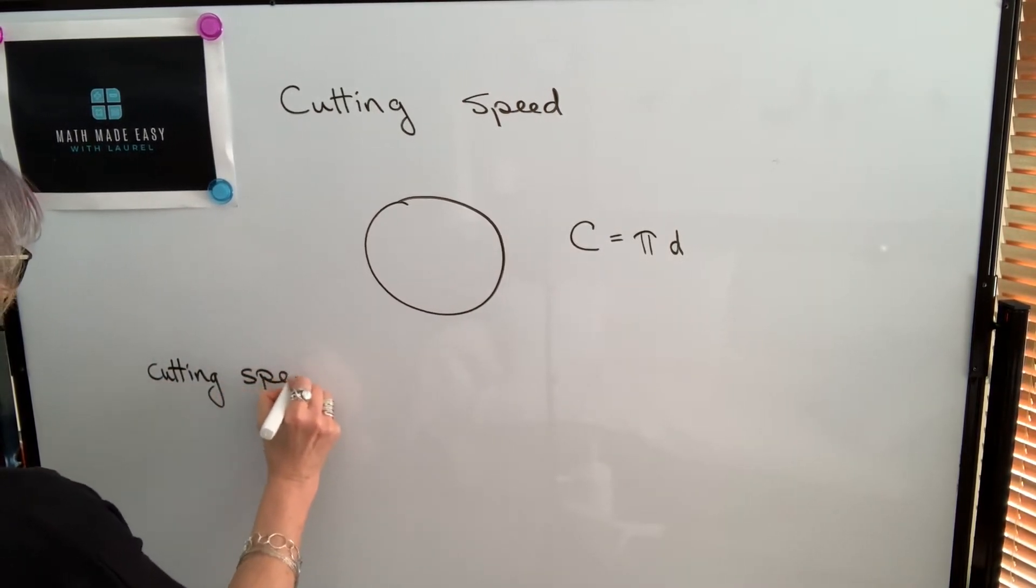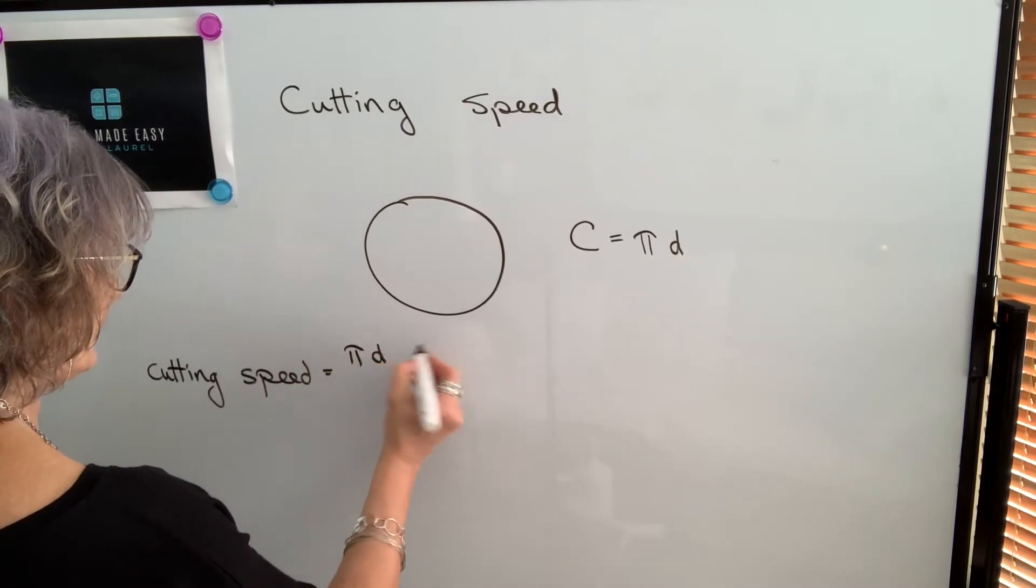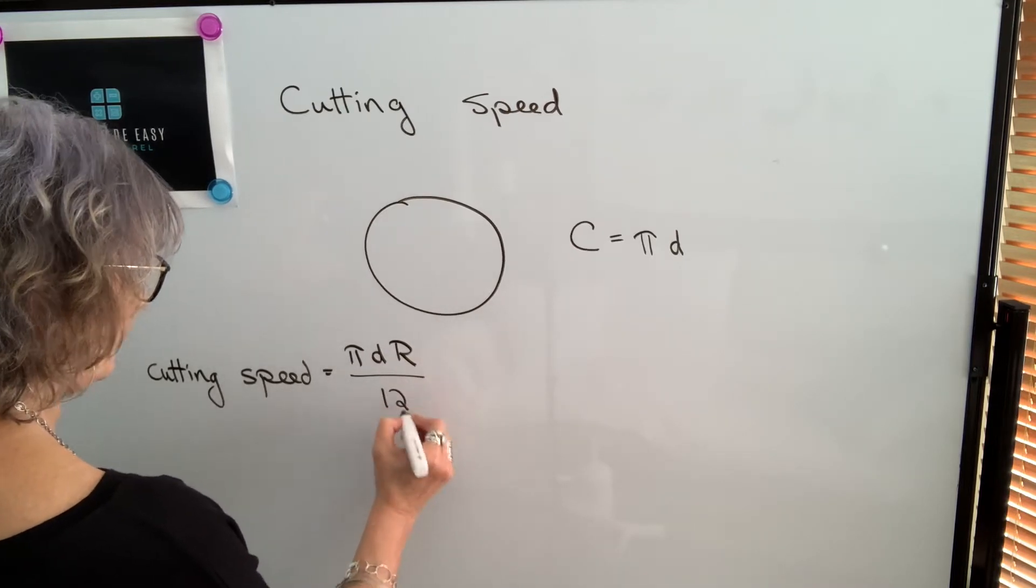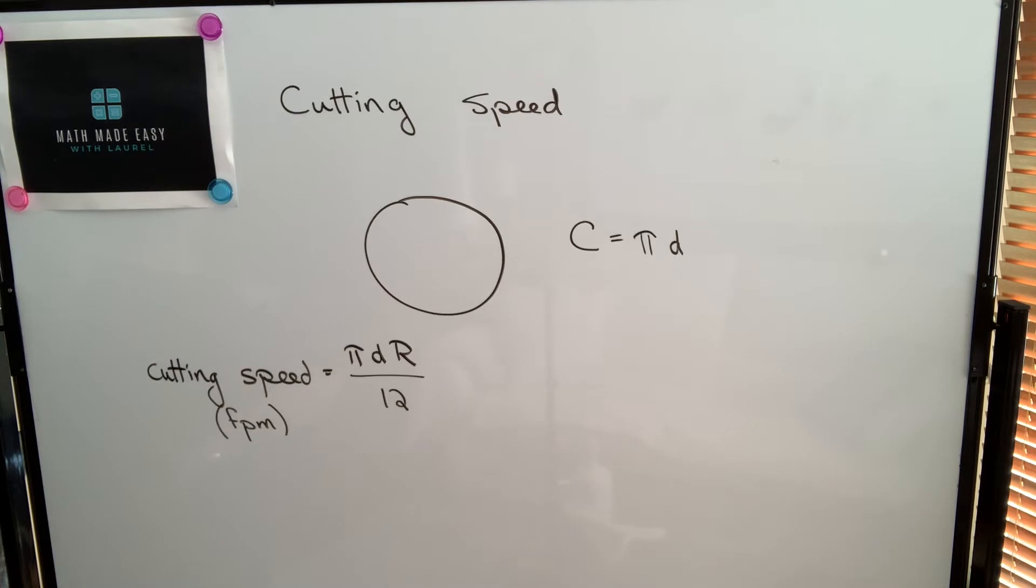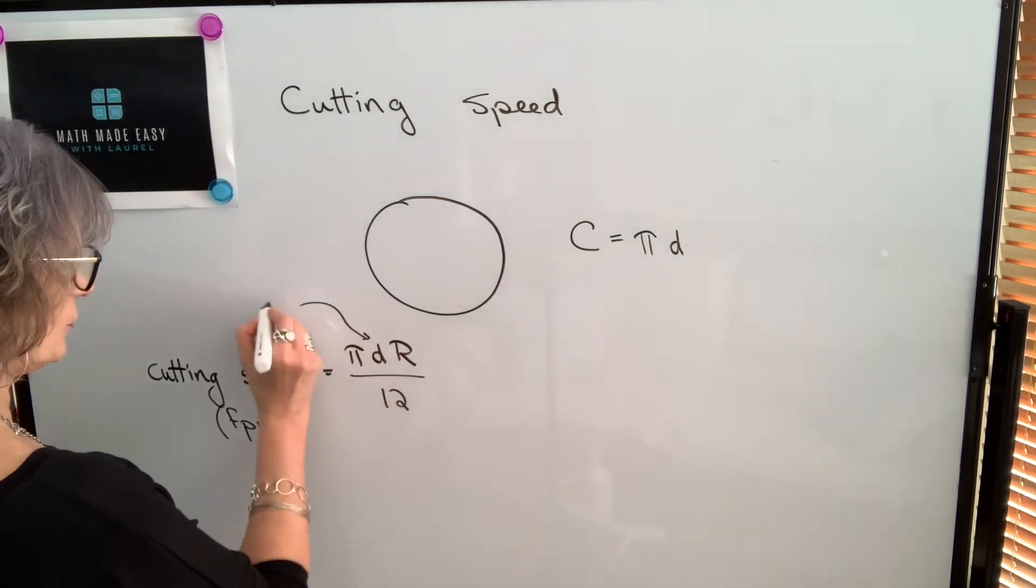Cutting speed will be equal to the circumference, which is π times d times r, which is revolutions per minute, divided by 12. That gives the cutting speed in feet per minute, which could also be called surface feet per minute. And this formula works if our diameter is in inches.